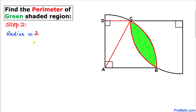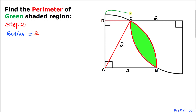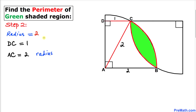Let's focus on the radii of the quarter circles. The radius of each quarter circle is 2, so this distance is also 2. We know the total distance from one end to the other is 3 units, and this radius is 2, so the remaining distance DC turns out to be 3 minus 2, which equals 1. Thus DC = 1 and AC = 2 units.